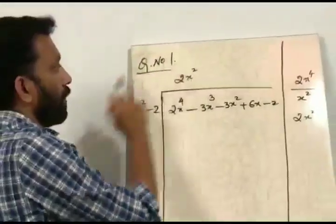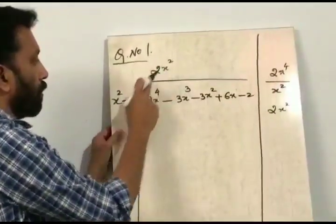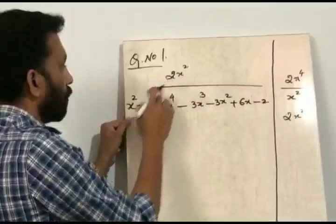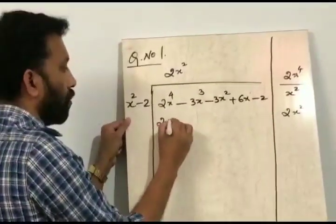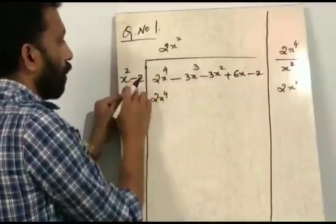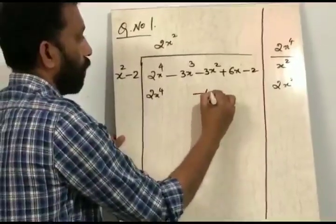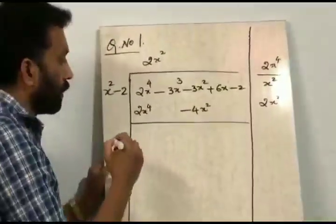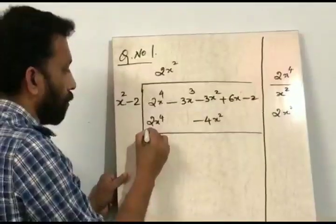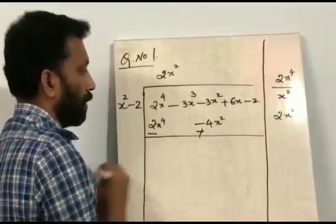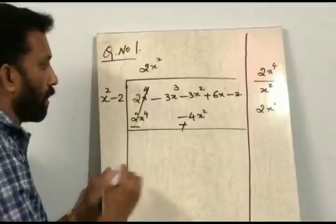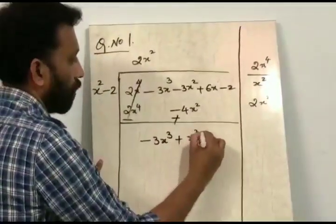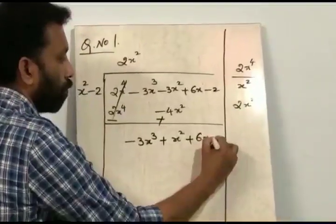After getting the first term, we will multiply 2x squared by x squared minus 2. So it becomes 2x squared into x squared, that is 2x to the power 4, and 2x squared into minus 2, that is minus 4x squared. Now we will change the sign, so it becomes minus and plus. These two terms cancel out, leaving minus 3x cubed plus x squared plus 6x minus 2.